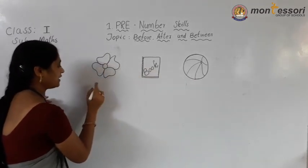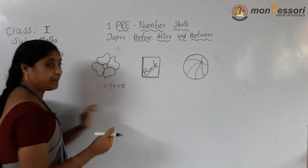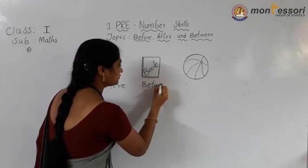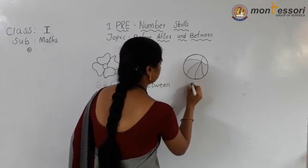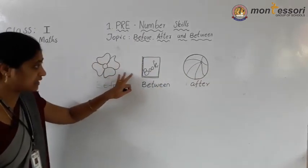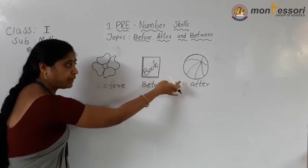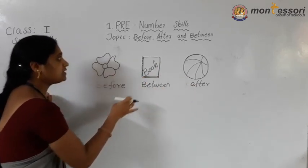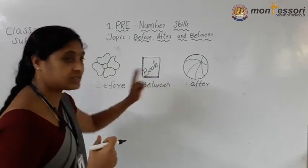Flower place is before. Book place is between. Ball place is after. Before means previous — front. After means back. Between means middle.